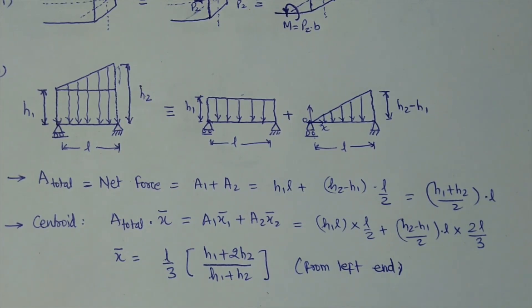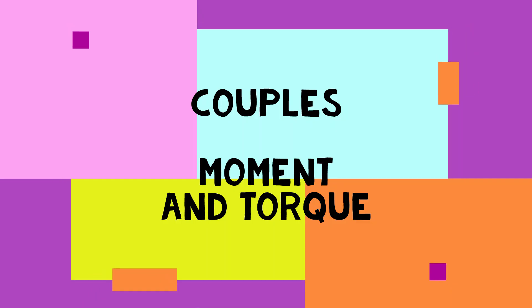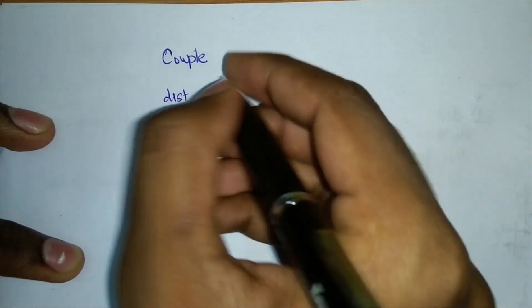Now let's move to today's topic: couples. What is a couple? What are the different types? And most importantly, what is the direction and axis of a couple? These concepts will help you in SFD and BMD analysis and other equations of solid mechanics. A couple is basically the multiplication of distance and force.